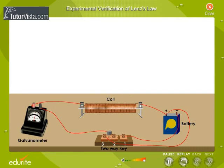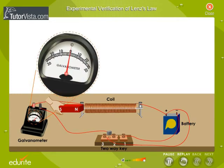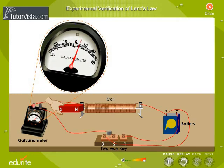Bring the north pole of the bar magnet towards the upper face of the coil. The galvanometer needle moves towards the right, showing that a current is induced in the coil in the anti-clockwise direction.